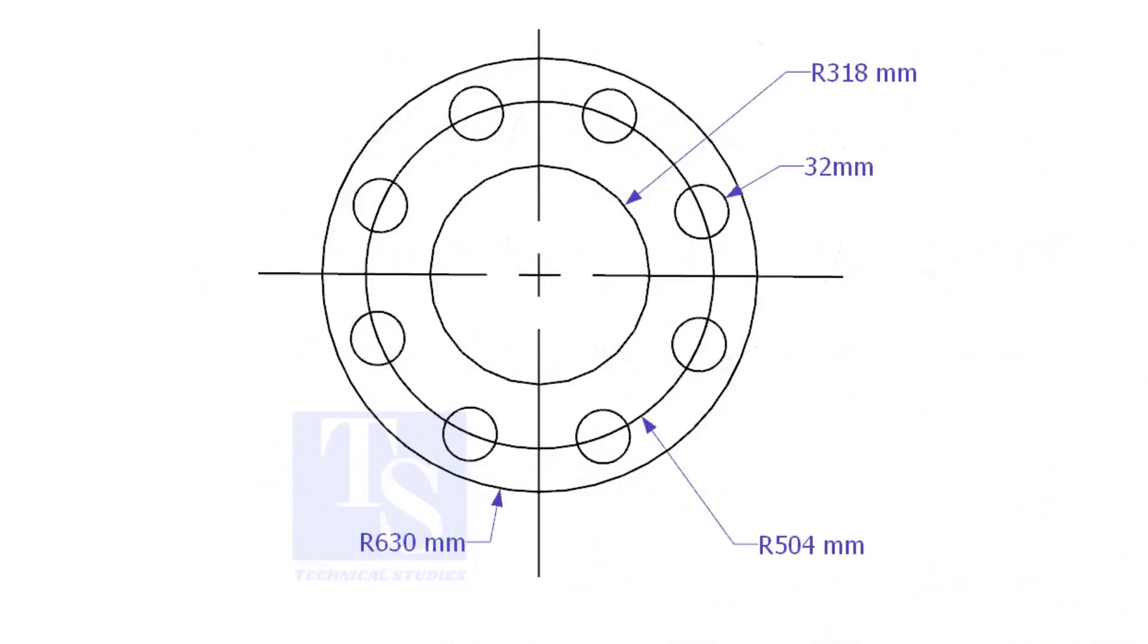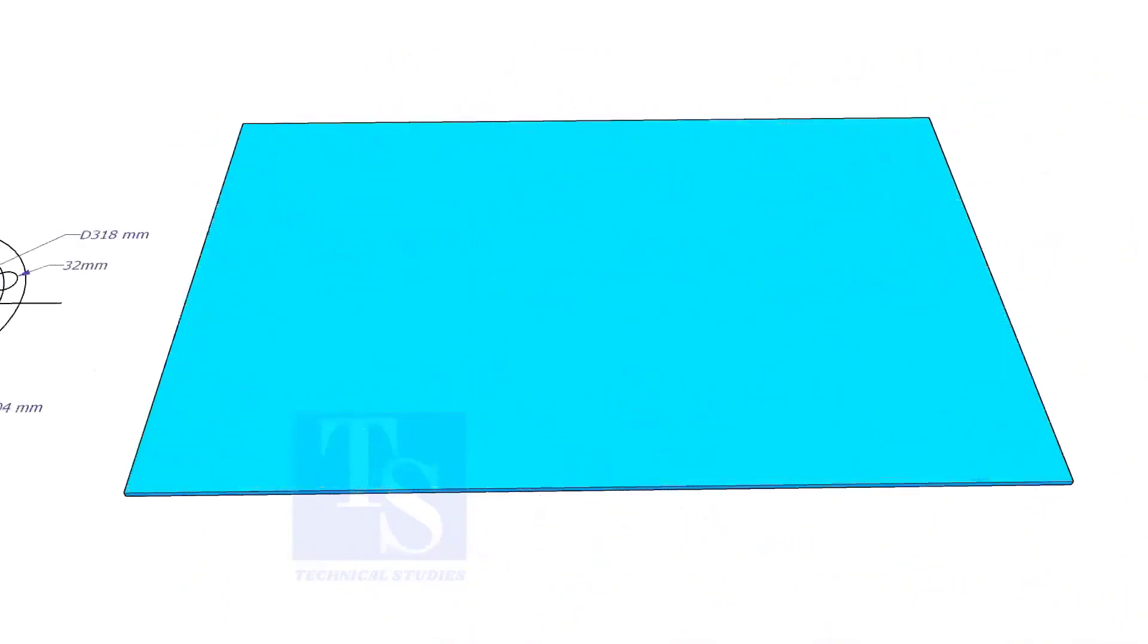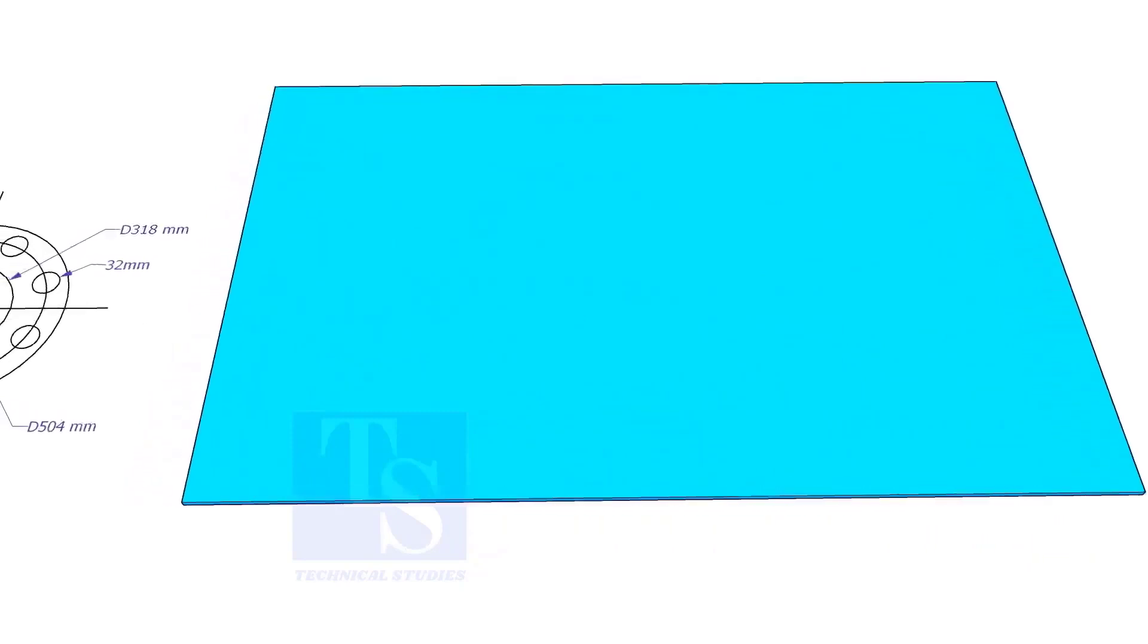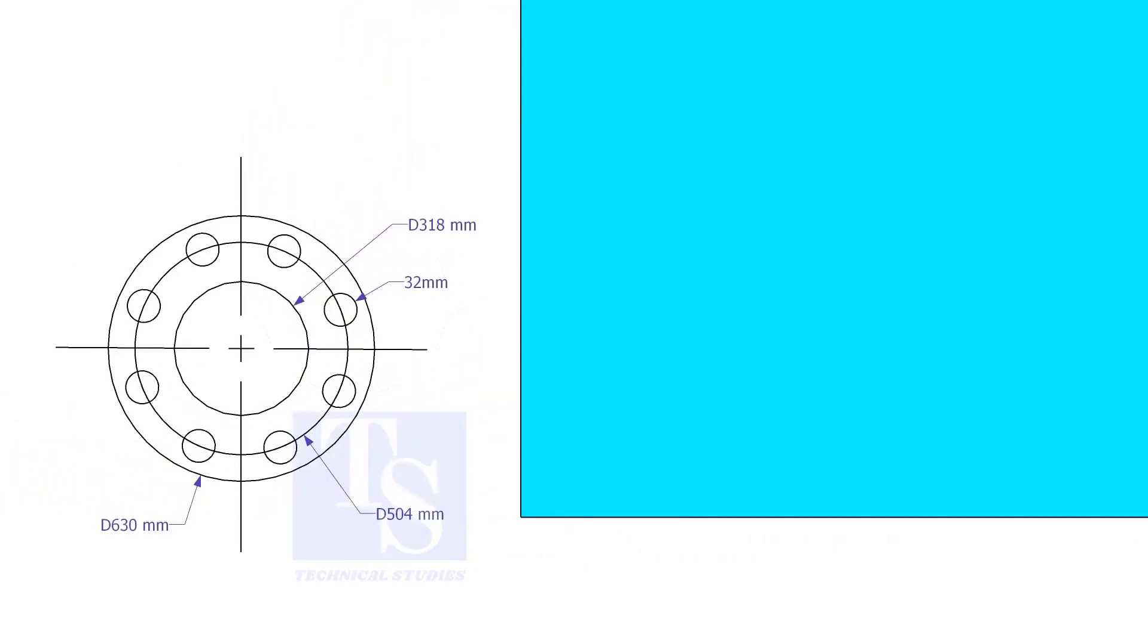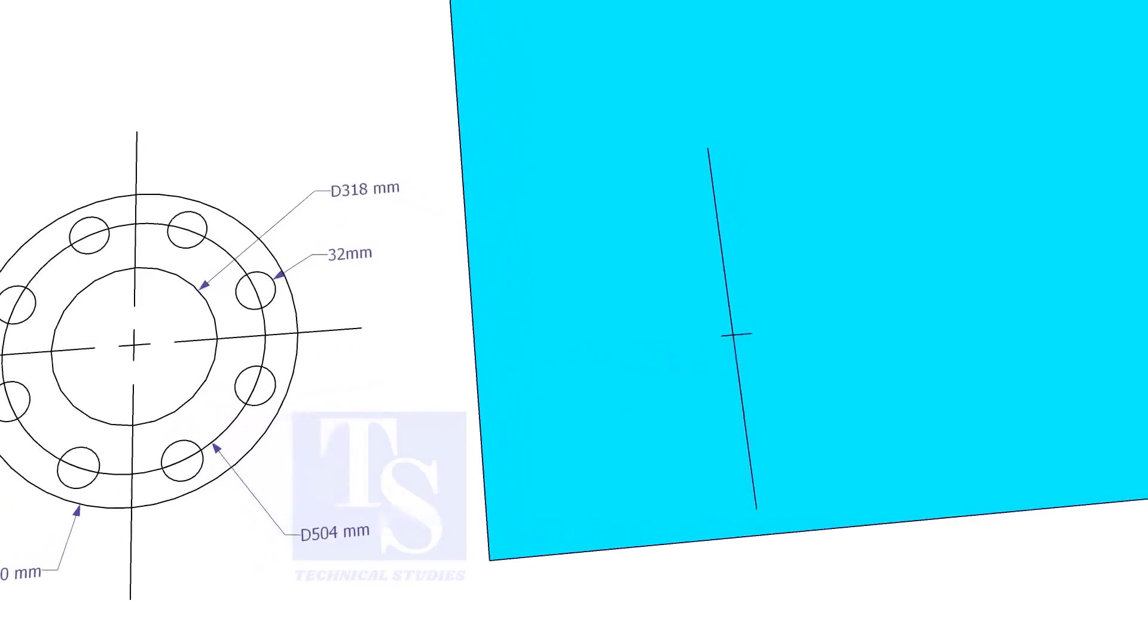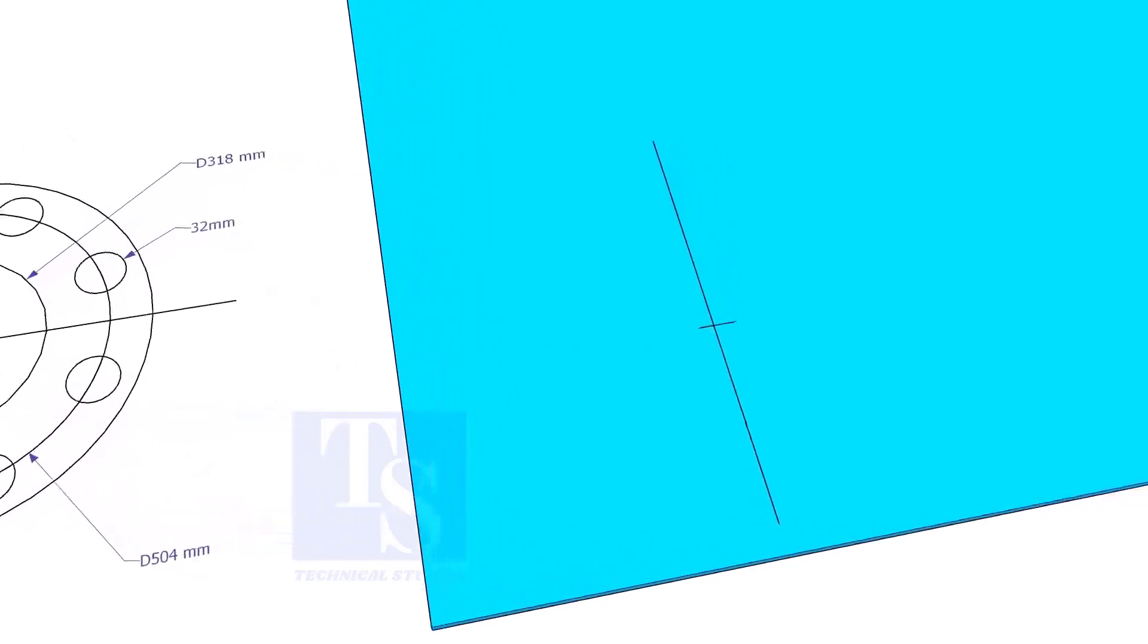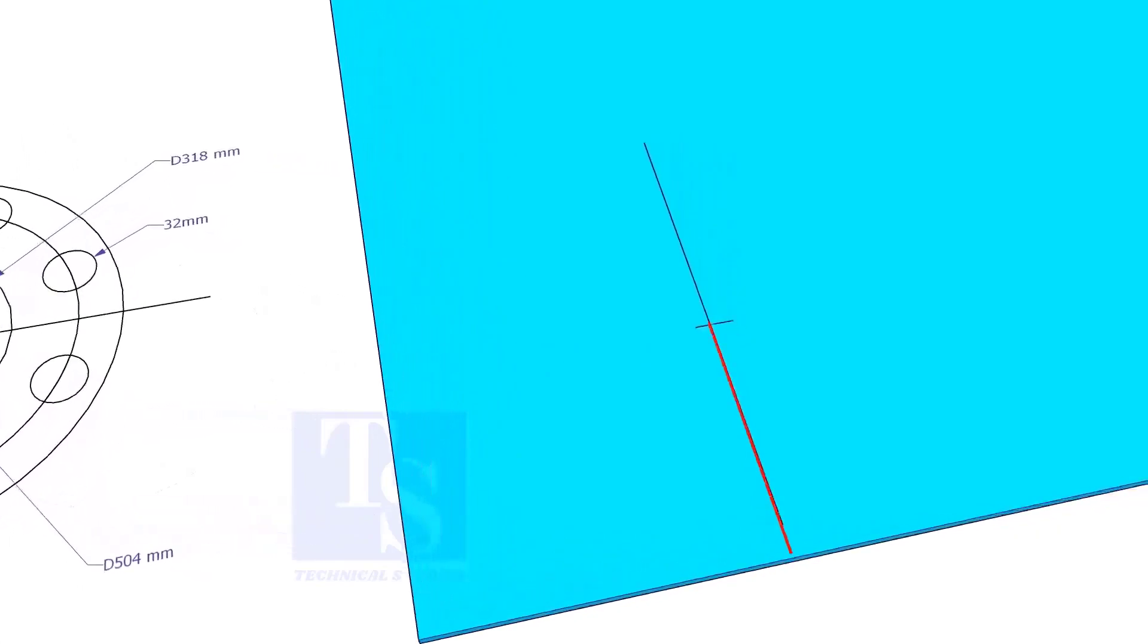Let us mark this flange. Draw a line 10 millimeters more than the half OD of the flange from the edge of the plate. Cut this line marking half OD plus 10 millimeters. Punch mark this center.